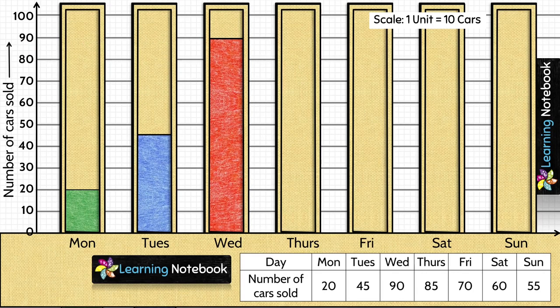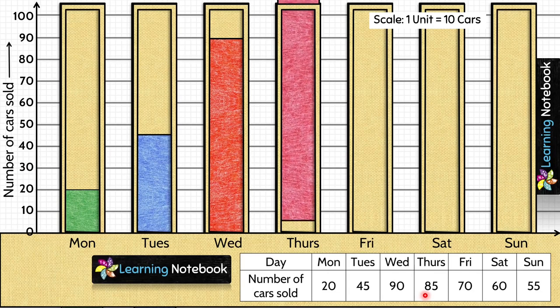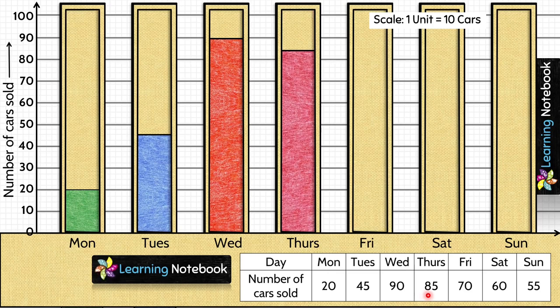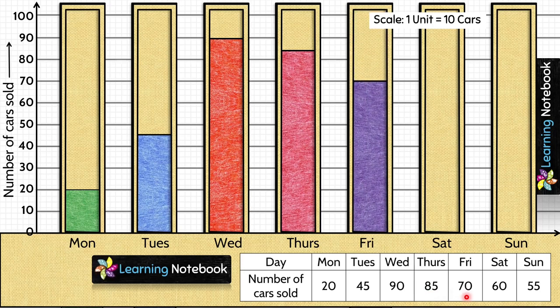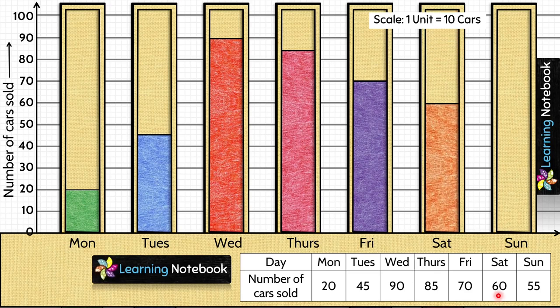Similarly, we are going to represent 85 as number of cars sold on Thursday with the help of pink colored bar. Next, we will use our purple colored bar to represent number of cars sold on Friday which is 70. Then number of cars sold on Saturday is 60. So let's insert an orange colored bar to represent number of cars sold on Saturday.